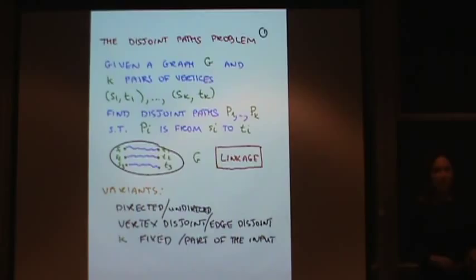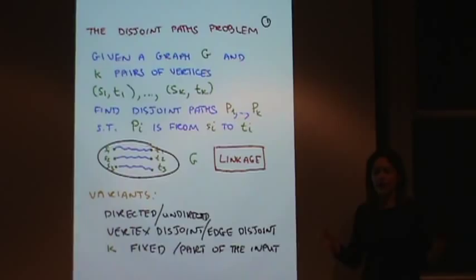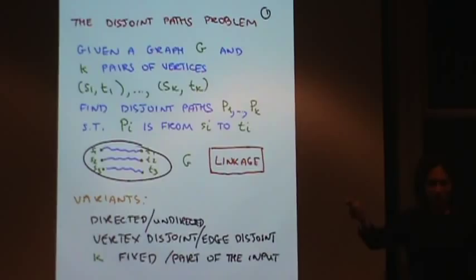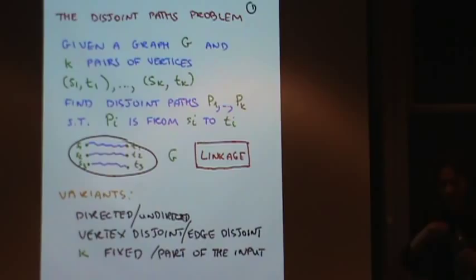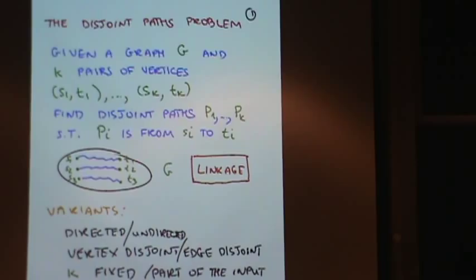There's a set of problems in graph theory called the disjoint path problem. What that means is I'll give you a bunch of pairs of terminals, and I want to know can you connect each terminal to the other in its pair. I'll give you pairs S1-T1, S2-T2, SK-TK. I want to connect S1 to T1, S2 to T2, SK to TK, in such a way that the different routes don't interfere.